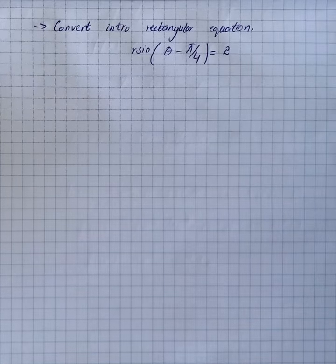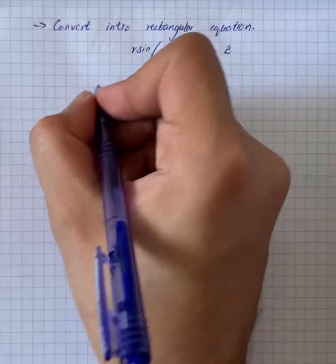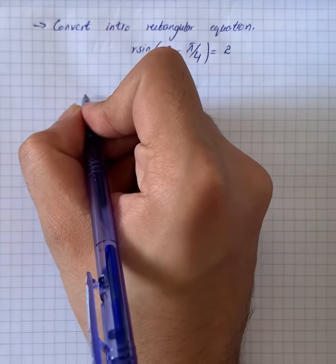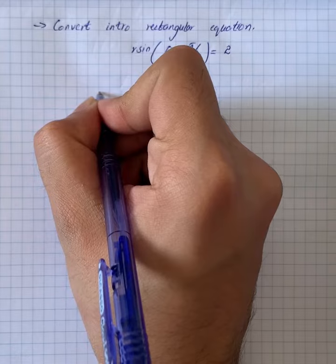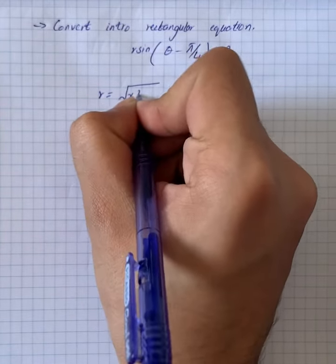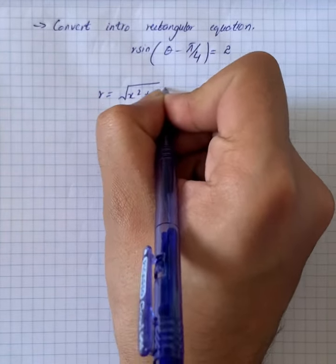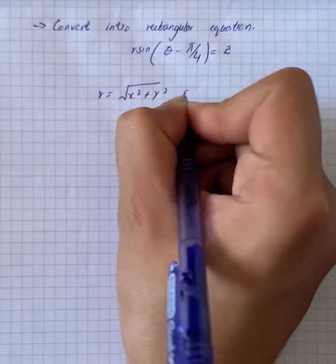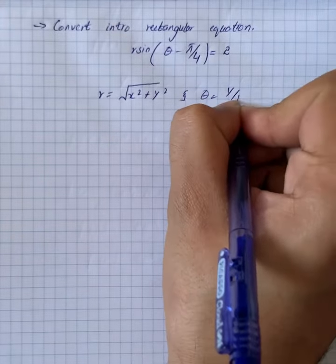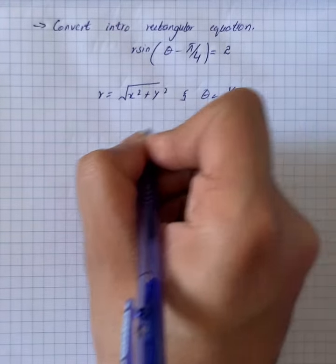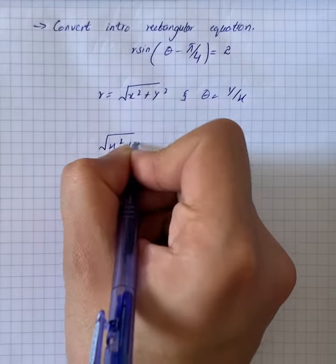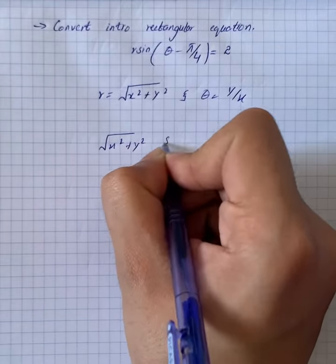Here we have a polar equation. First of all, we have r is equal to the square root of x squared plus y squared, and theta is equal to the arctangent of y over x. So we can write x squared plus y squared.